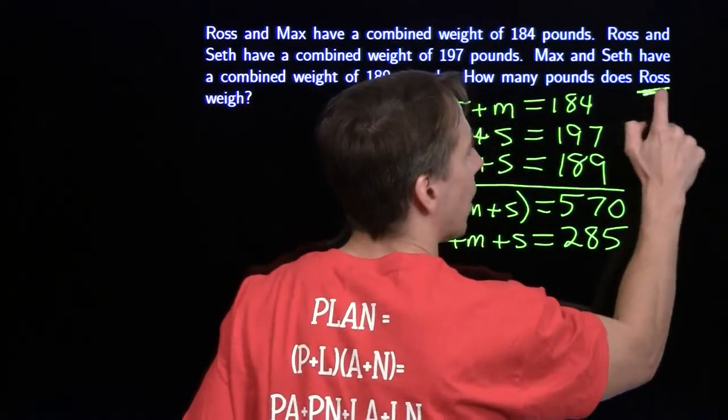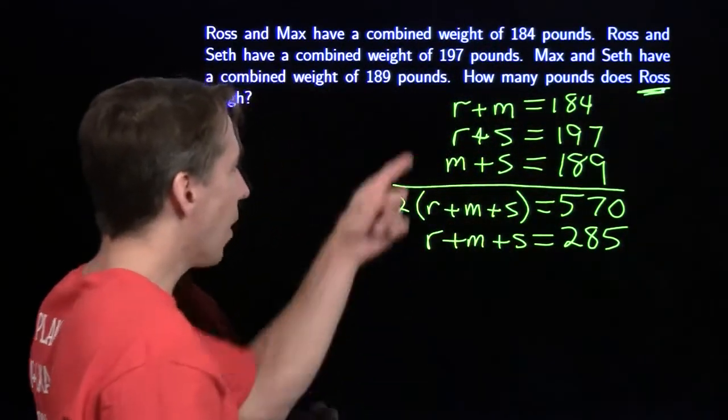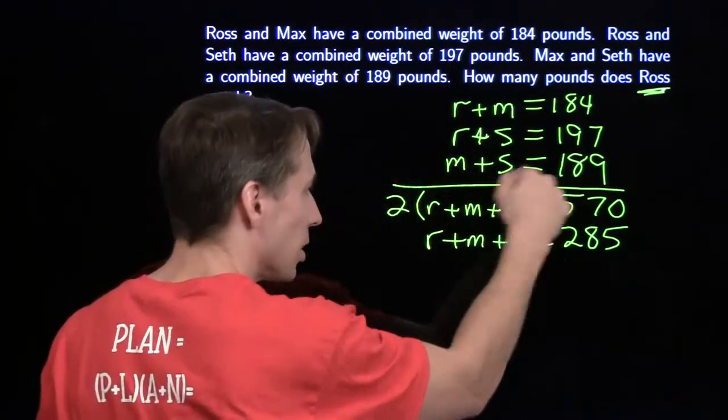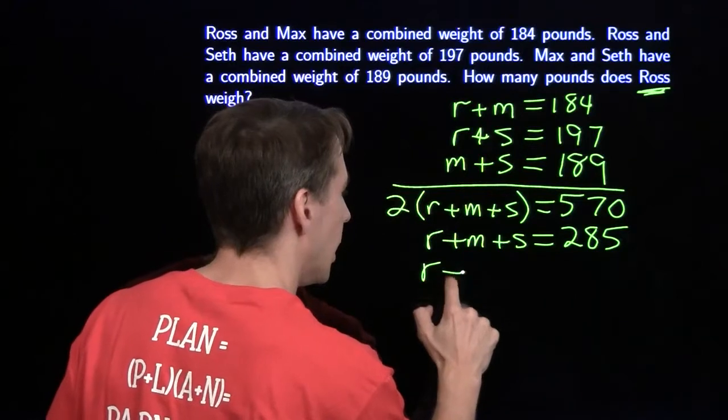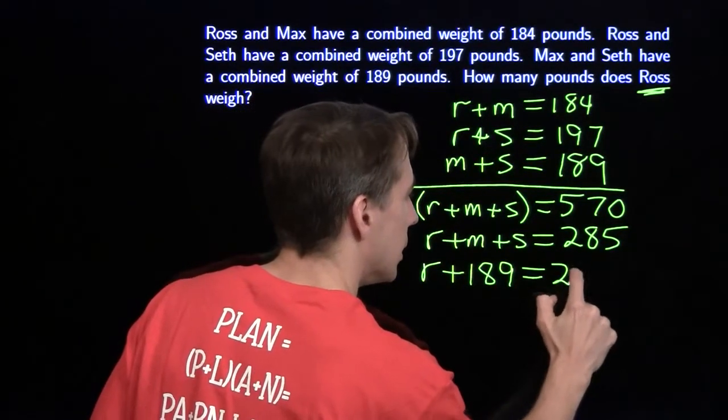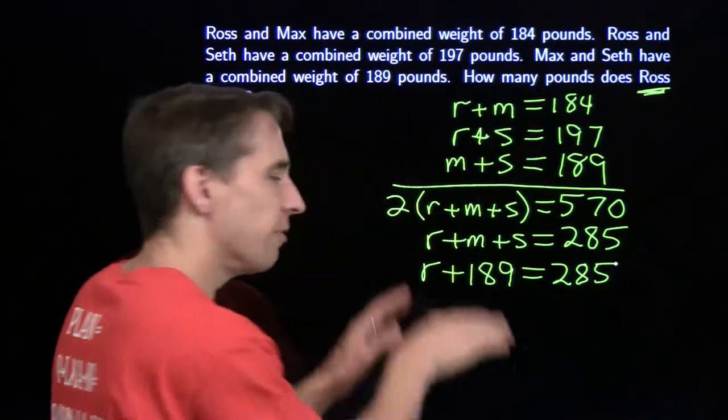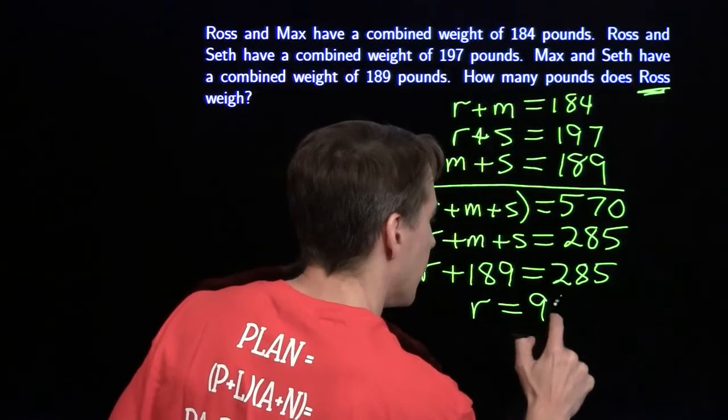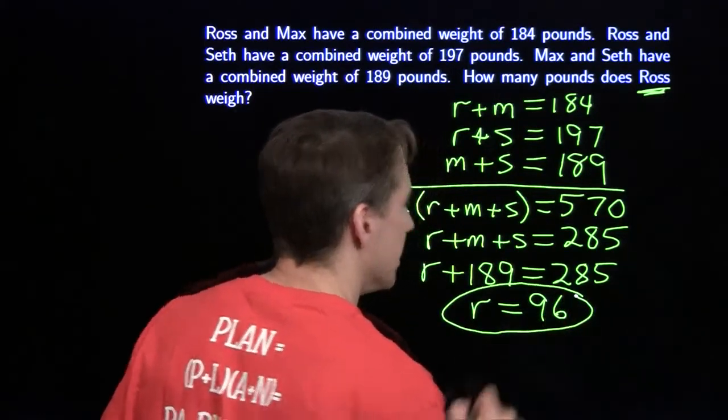The one I really care about is Ross. I want to find R here in these equations. But I've got M plus S sitting right there, that's 189. So I can drop that right in here. I get R plus 189 is 285.